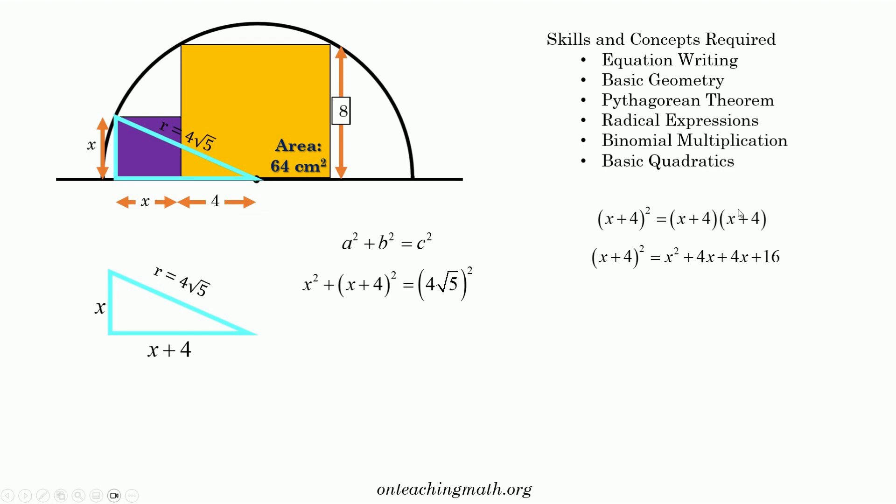Where the 8 comes from is when you multiply using the shortcut FOIL. The outside, x times 4 is 4x. The inside, 4 times x is 4x. 4x plus 4x is 8x. So let's go ahead and rewrite this over here. We've got x squared plus this thing, x squared plus 8x plus 16 equals 4 root 5 squared.